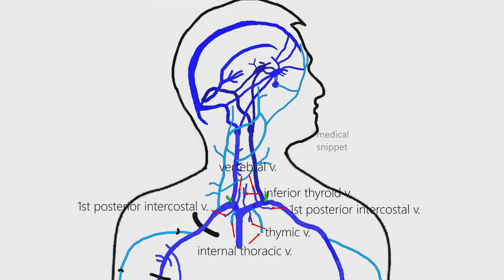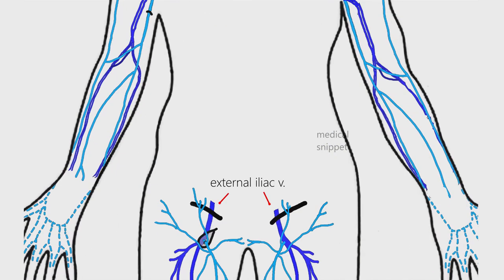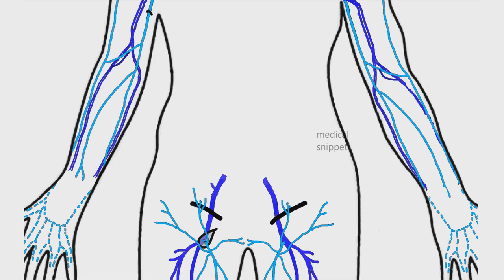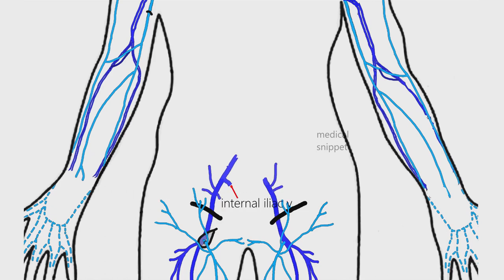The external iliac vein is the continuation of the common femoral vein after it crosses underneath the inguinal ligament. The tributaries of the external iliac vein are the inferior epigastric, deep circumflex iliac veins, and pubic veins. The internal iliac vein joins with the external iliac vein to form the common iliac vein.